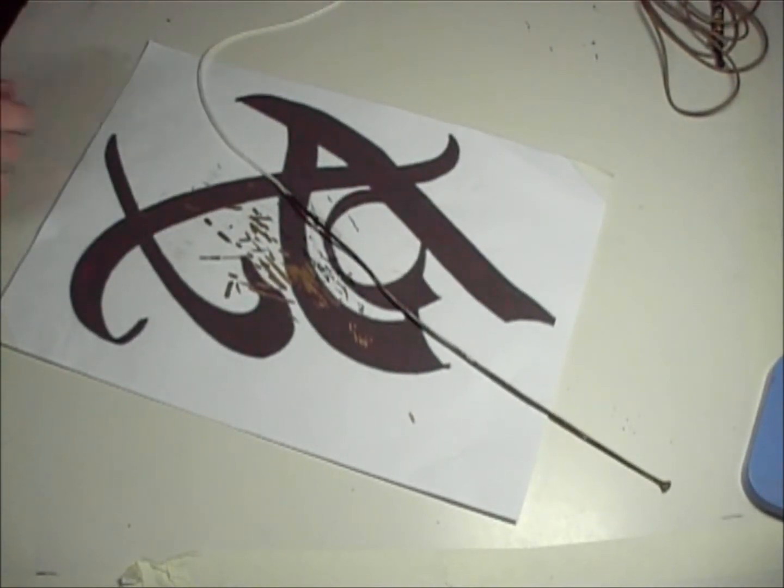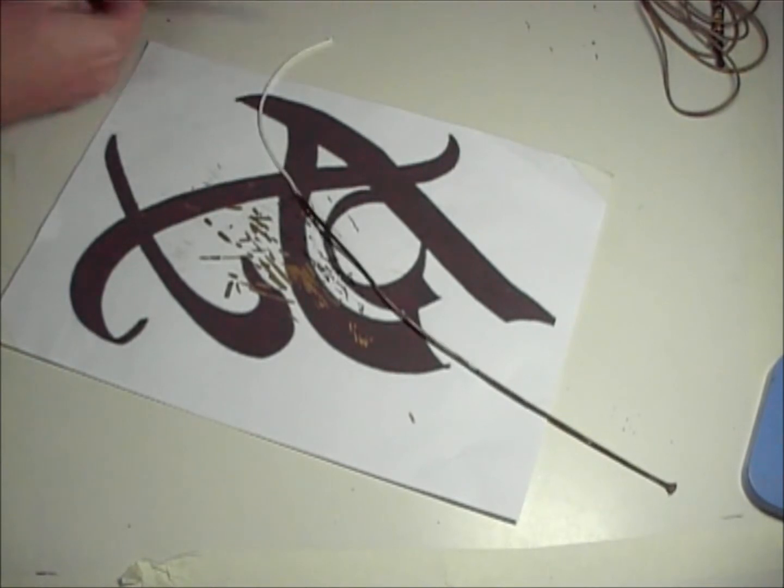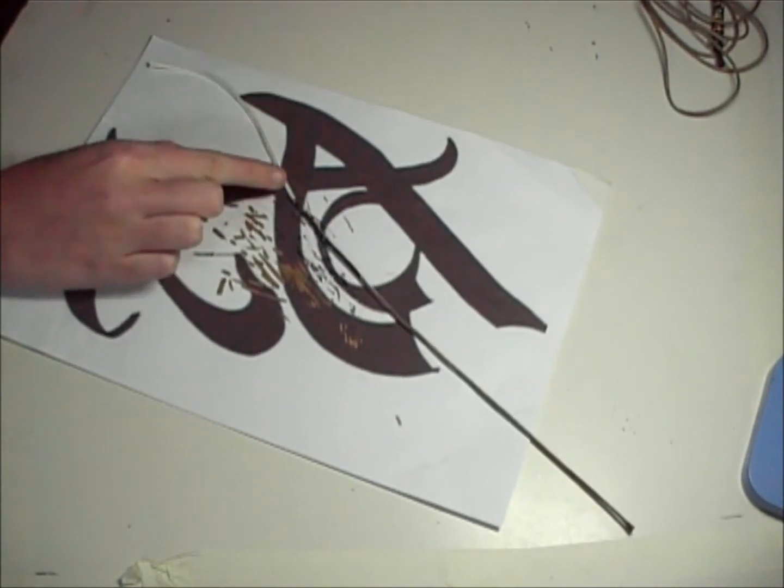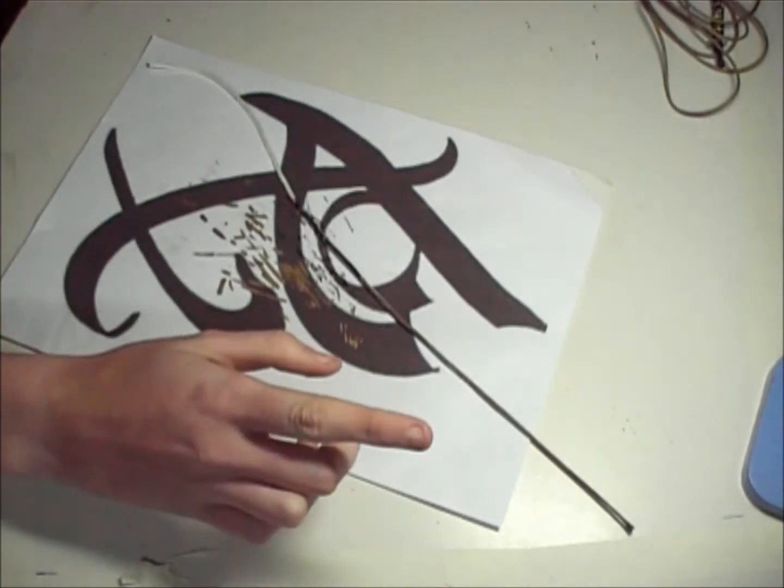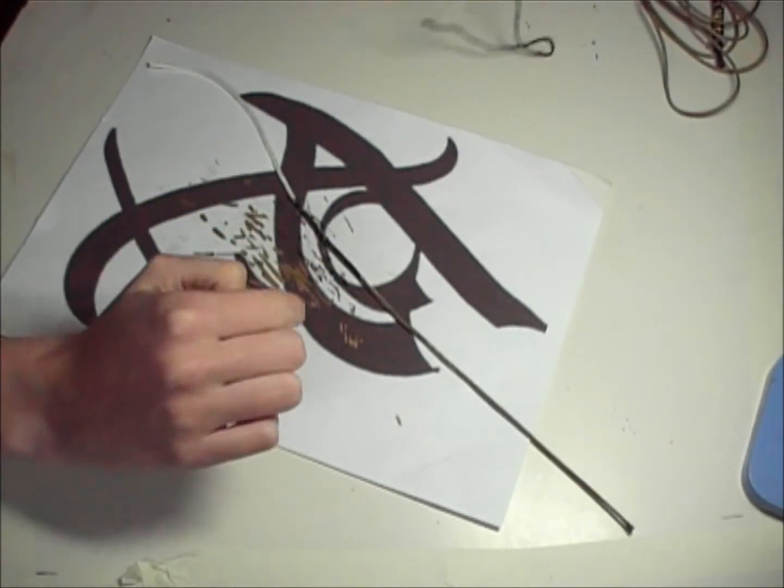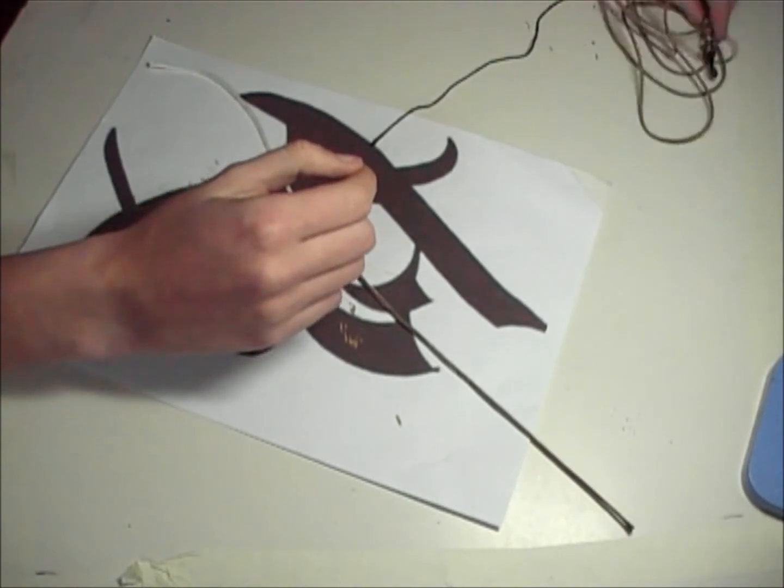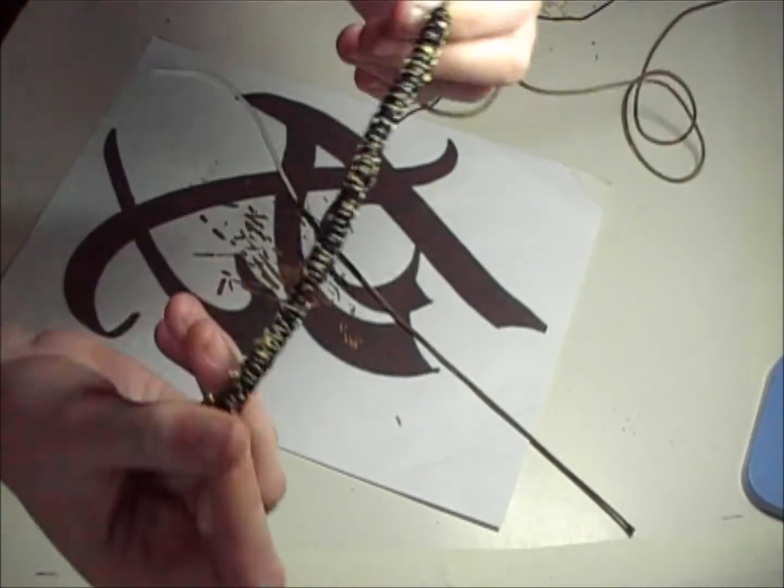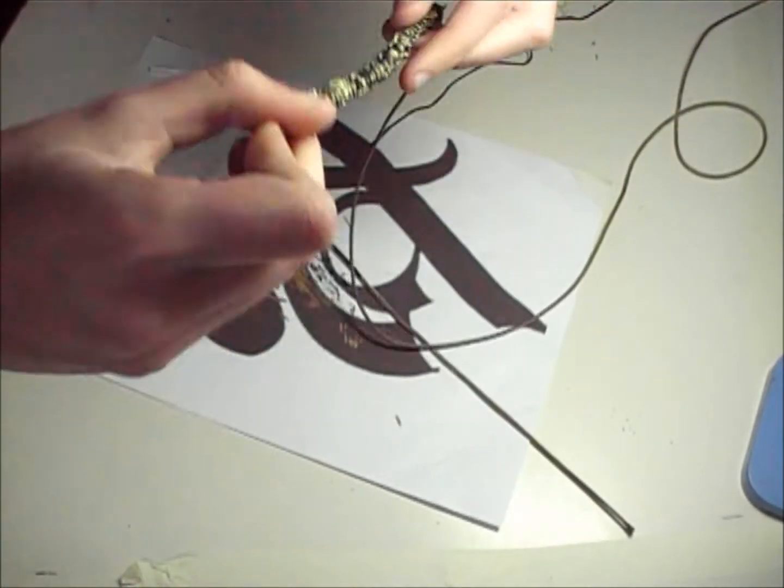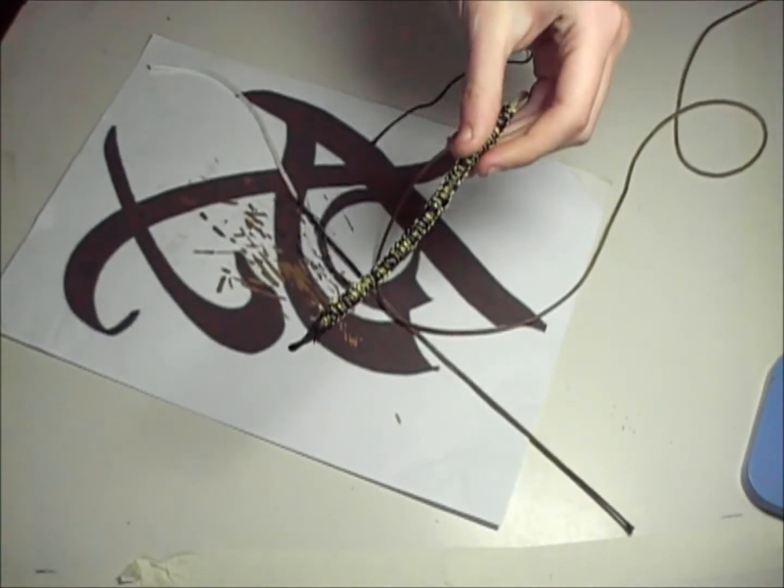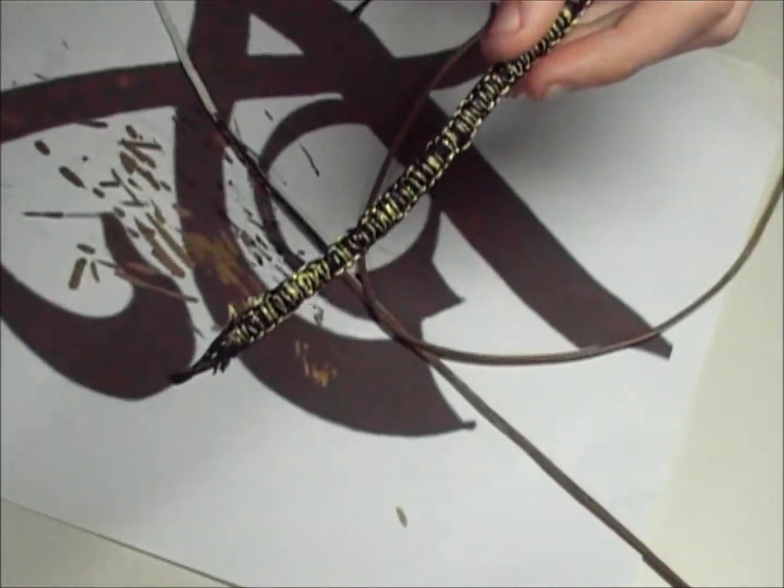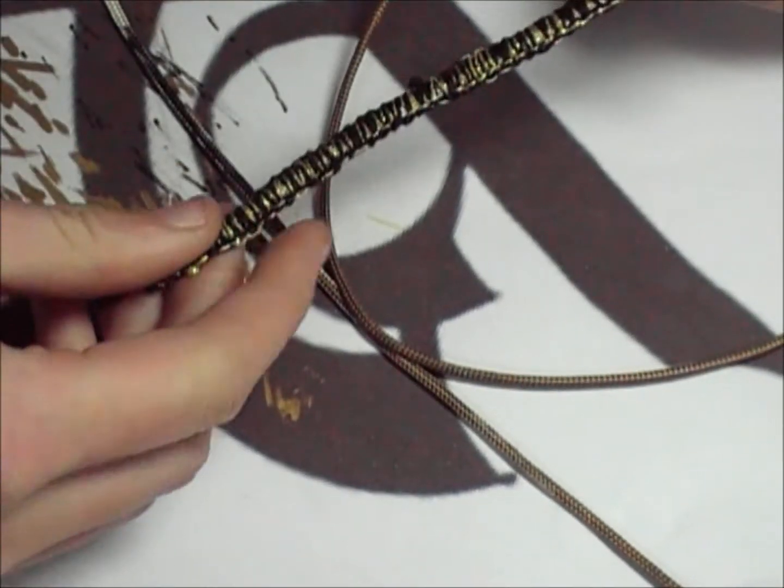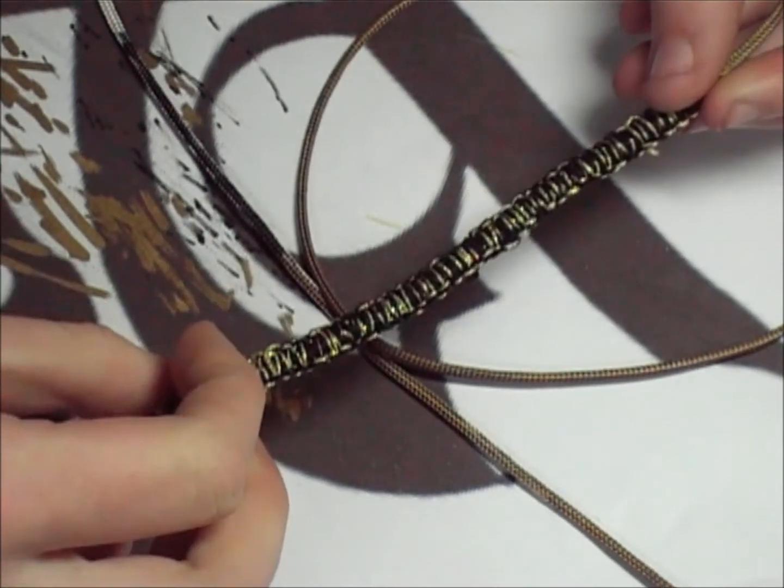So once we've done that we're going to move on to the handle. Now I'm not going to make this a handle in this tutorial but I'll show you how I have done to make this handle just quickly with wool alright.